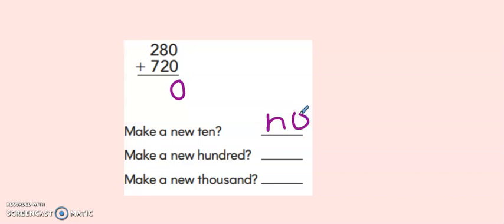Eight tens plus two tens? Hmm, eight, nine, ten. That's ten tens. I know that ten tens gives me a new hundred. So yes, I got a new hundred. And let's check in the hundreds place. Seven, eight, nine, ten. Oh, there's another one with ten hundreds. Ten hundreds gives me one thousand. So I did get a new thousand.